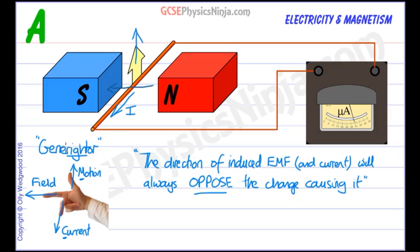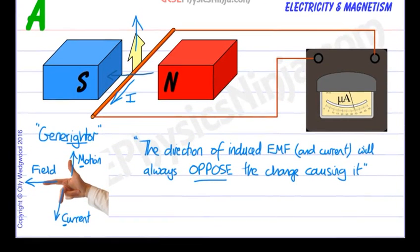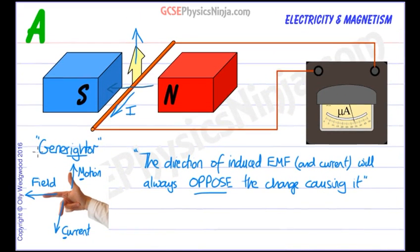So that's the generator rule, and it's a good one to remember. It saves all of the hassle with the catapult effect and the right hand grip rule. Don't need to worry about that, just remember generator.